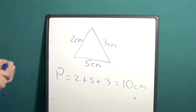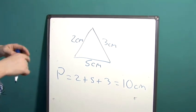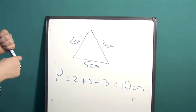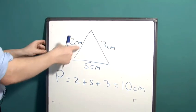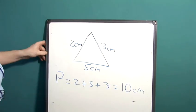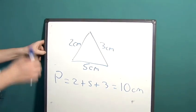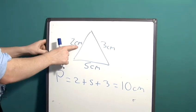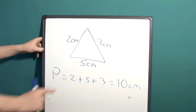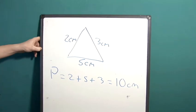Just to recap, whatever the triangle is, as long as you know the lengths of the three sides, all you need to do to find the perimeter is add the three side lengths together. Once you've done that, if you remember that the units are still the original length units you had in the question, then you just put those at the end with your final answer.